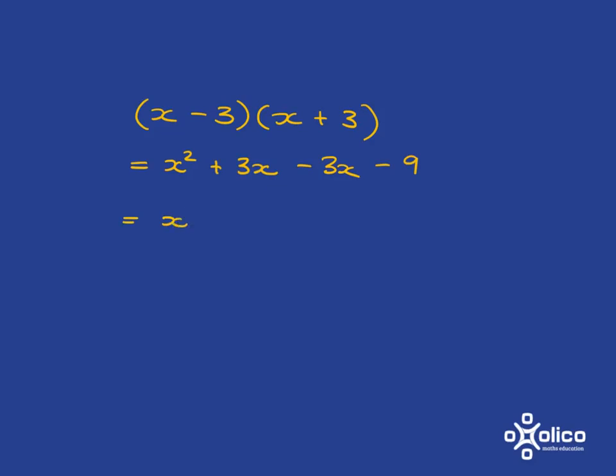And what happens is that I'm going to have plus 3x minus 3x, so those are going to disappear. And I'll just leave you left with x squared minus 9.